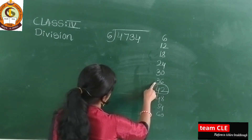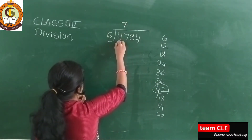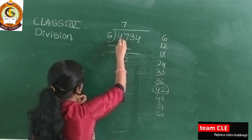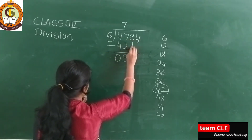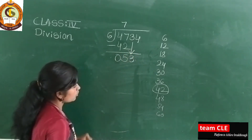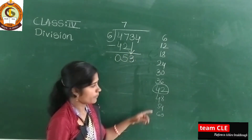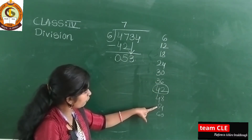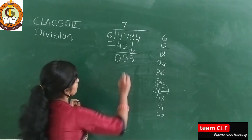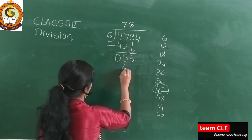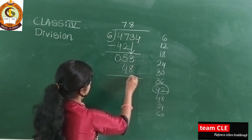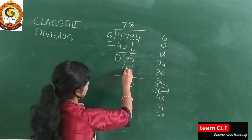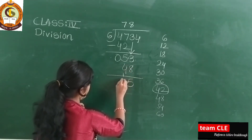So 6×7=42. Subtract: 7 minus 2 is 5, and 4 minus 4 is 0. Bring down the 3 — it becomes 53. Check the table: 30, 36, 42, 48 — here 54 is too big, so the nearest small is 48. So 6×8=48. Subtract: 13 minus 8 is 5, and the next digit minus 4 gives 1, then 1 minus 1 is 0.